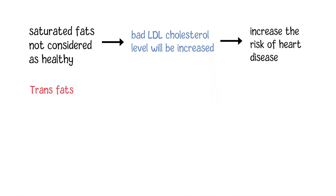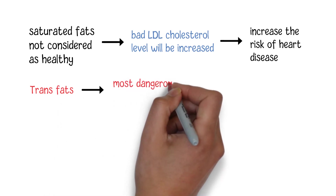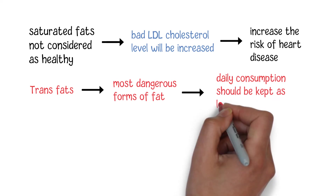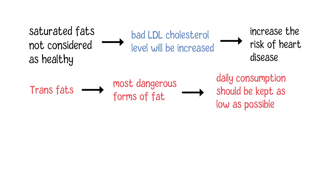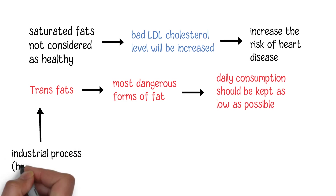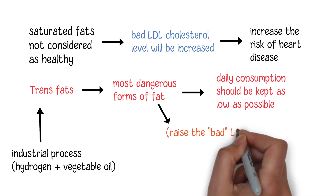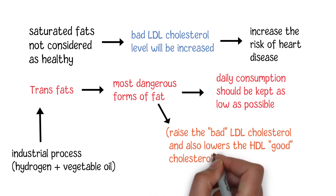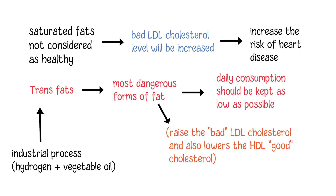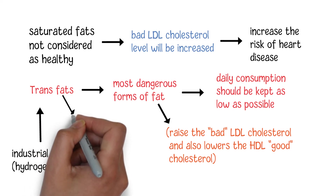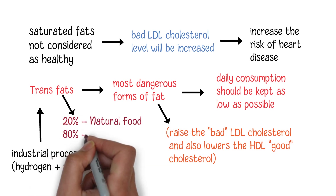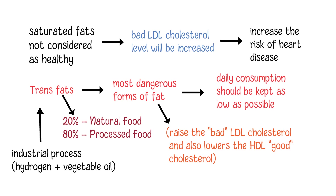Compared with saturated and unsaturated fat, trans fats are considered to be some of the most dangerous forms of fat, and the daily consumption of trans fat should be kept as low as possible. Trans fats are usually manufactured through an industrial process to add hydrogen into vegetable oil to make it solid at room temperature. So from a structural perspective, trans fats are similar to saturated fats. However, unlike other types of fats, trans fats raise the bad LDL cholesterol and also lower the HDL good cholesterol in your body. Although a small amount of trans fats comes from natural foods such as meat and dairy products, more than 80% of trans fats are from processed foods.